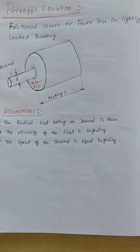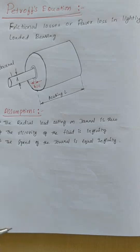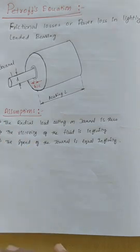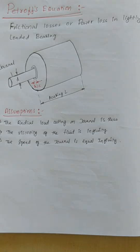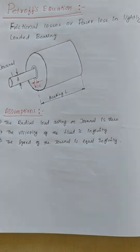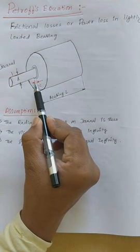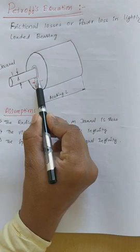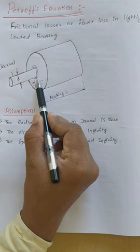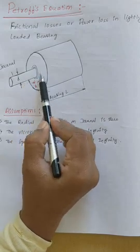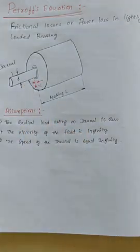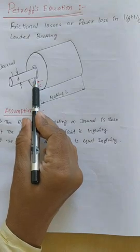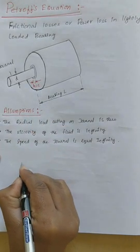Practically speaking, it is impossible to satisfy these conditions. However, if the load is light enough and if the journal has sufficiently high speed, the viscosity will be very high, and then the eccentricity between the journal and the bearing is very small, so that the oil film around this region can be considered to have uniform thickness.